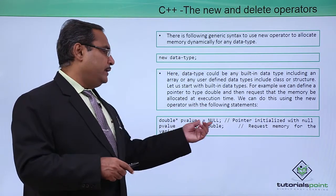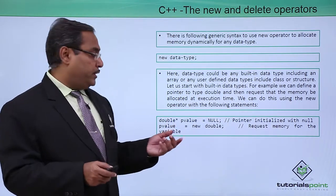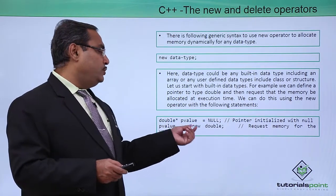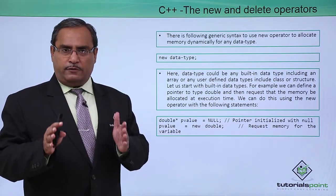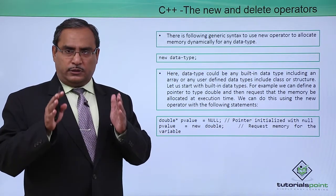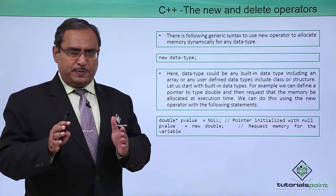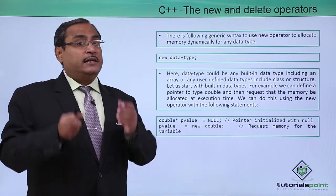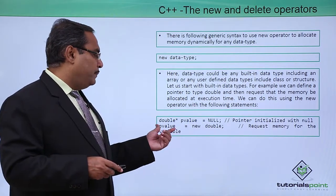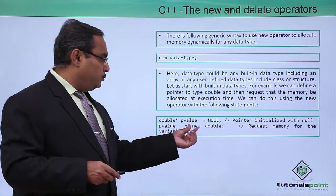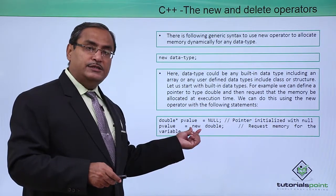We can initialize it to null initially, making it a null pointer. Then p_value = new double — a memory space will be allocated to hold a double value. The starting address of that memory block will be assigned to the variable p_value. That is how we use the new operator.